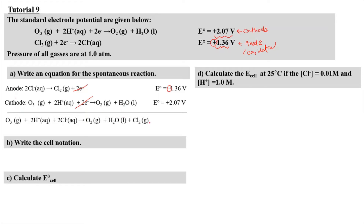The E° cell for this reaction is positive 0.71 volts, where negative 1.36 adds up with 2.07 volts. Now we have to write the cell notation.